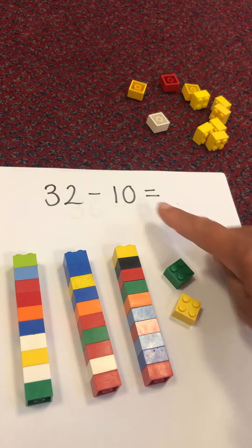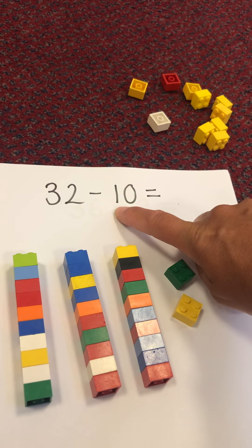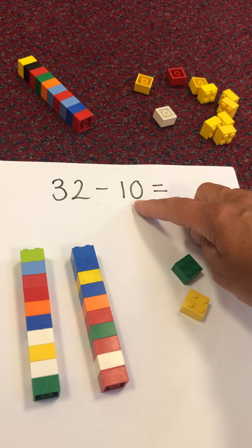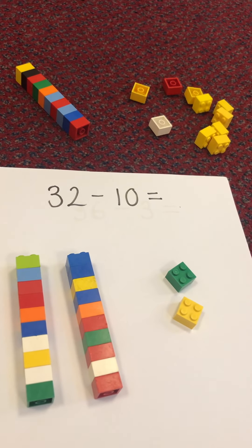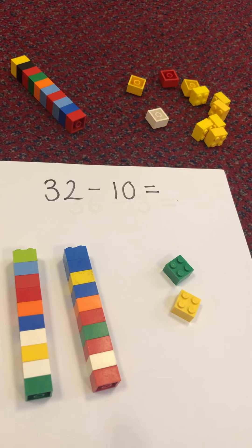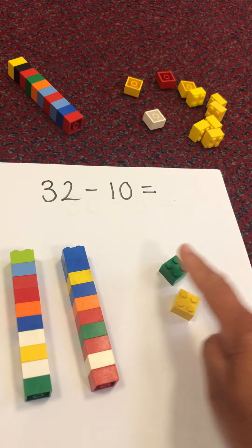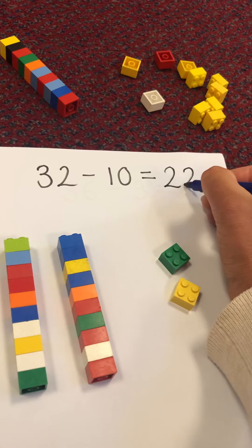How many do I have to take away? Yes, just one lot of ten. Ten, and no ones. So now what do I need to do? That's right, I need to count what's left. Are you ready to count with me? Ten, twenty, twenty-one, twenty-two. So our answer is 22.